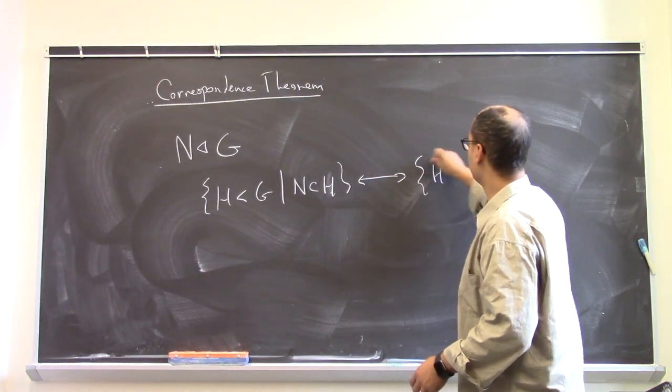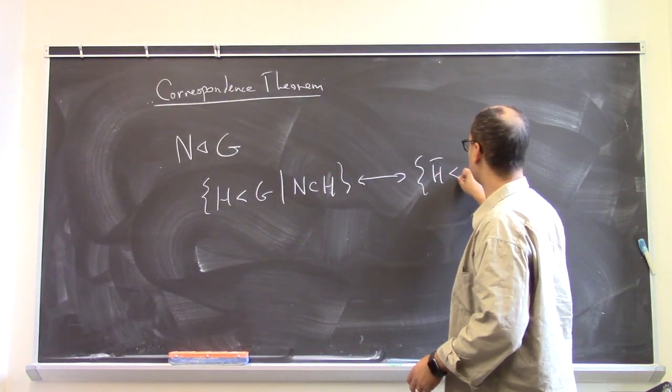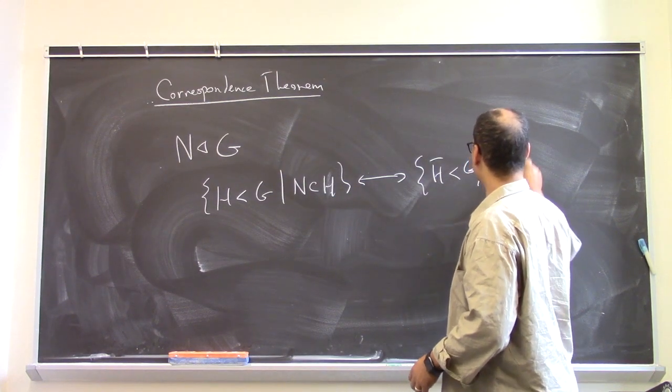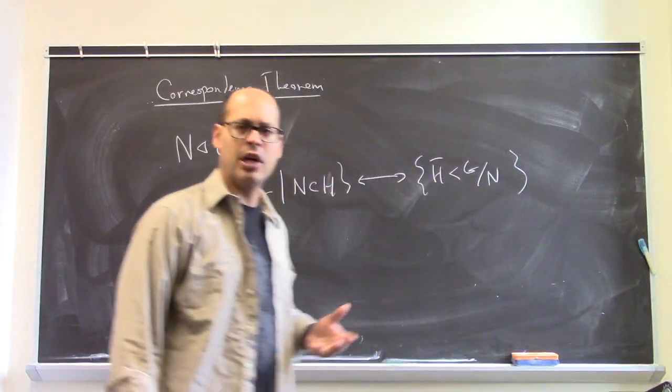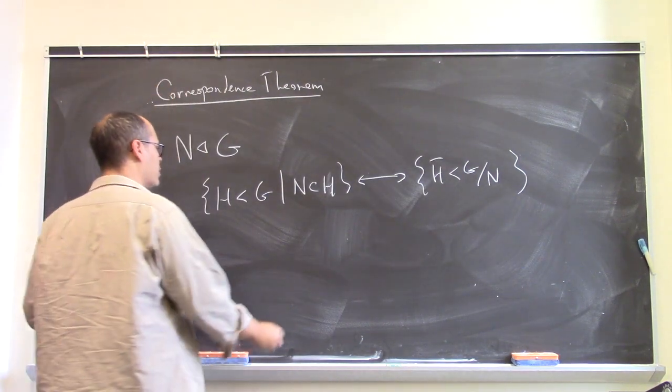So we have a bijection between subgroups which contain N and subgroups H-bar of the quotient group G mod N. And let me just briefly describe this bijection. How does it work?